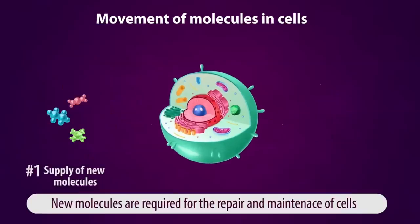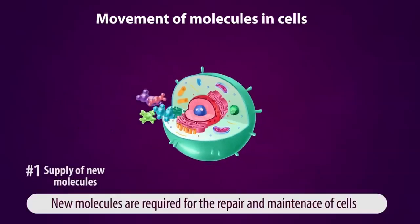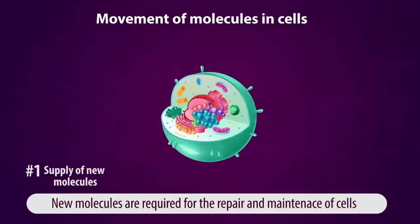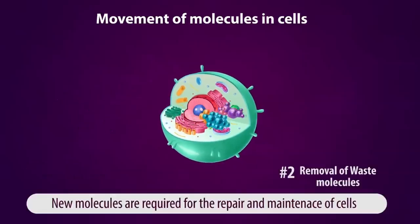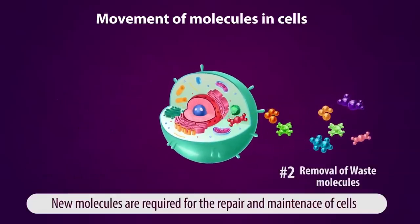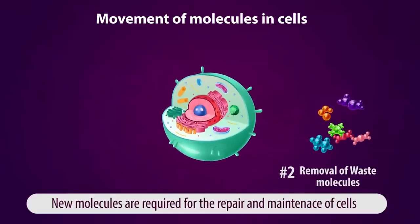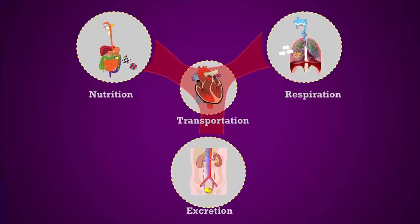First, supply of new materials. Second, removal of waste and unwanted materials from the cells. These two tasks are achieved by life processes. In this chapter, we will learn about four important life processes.